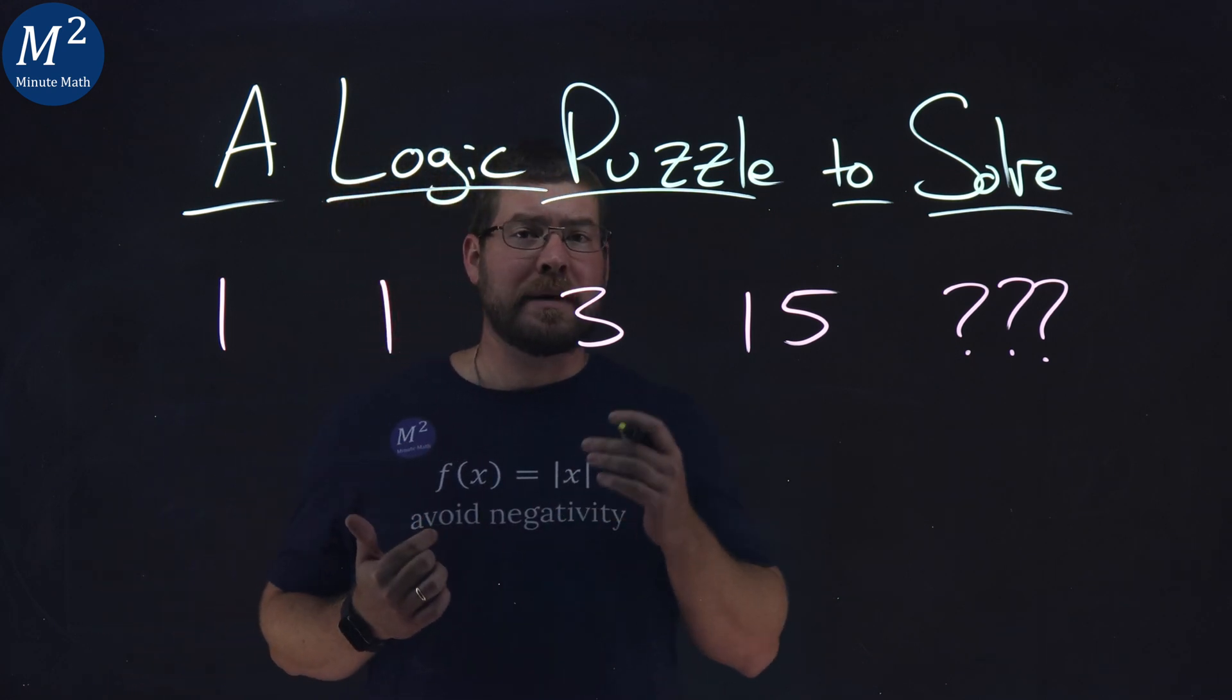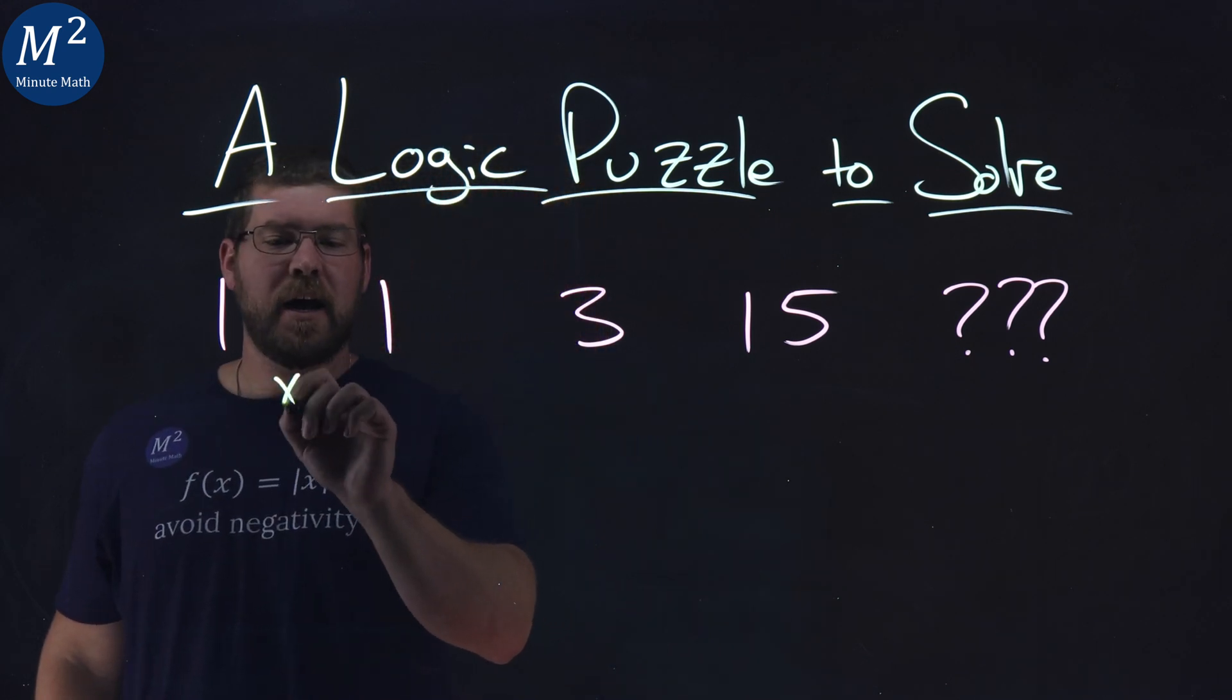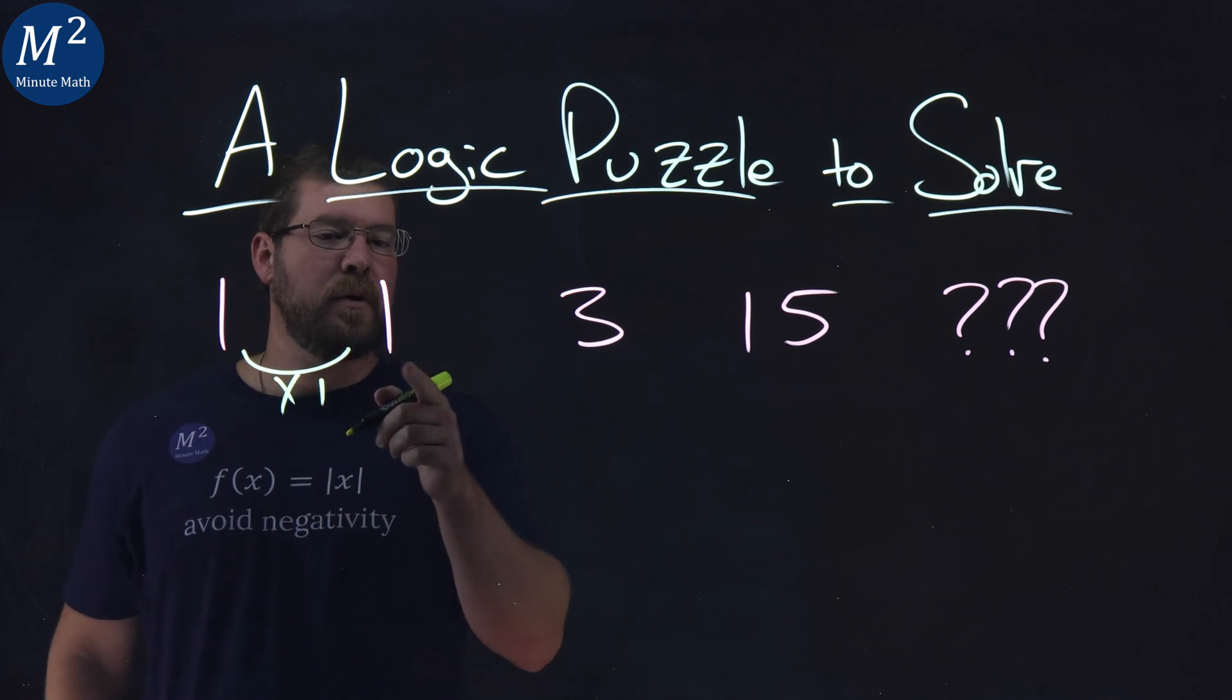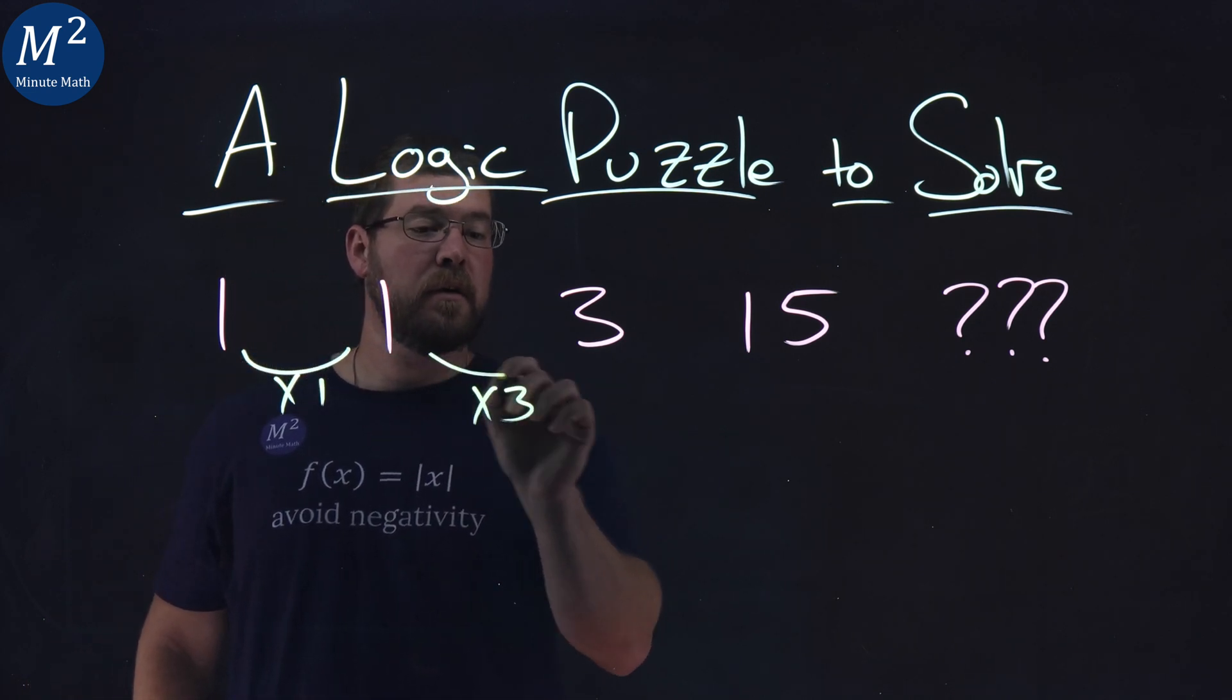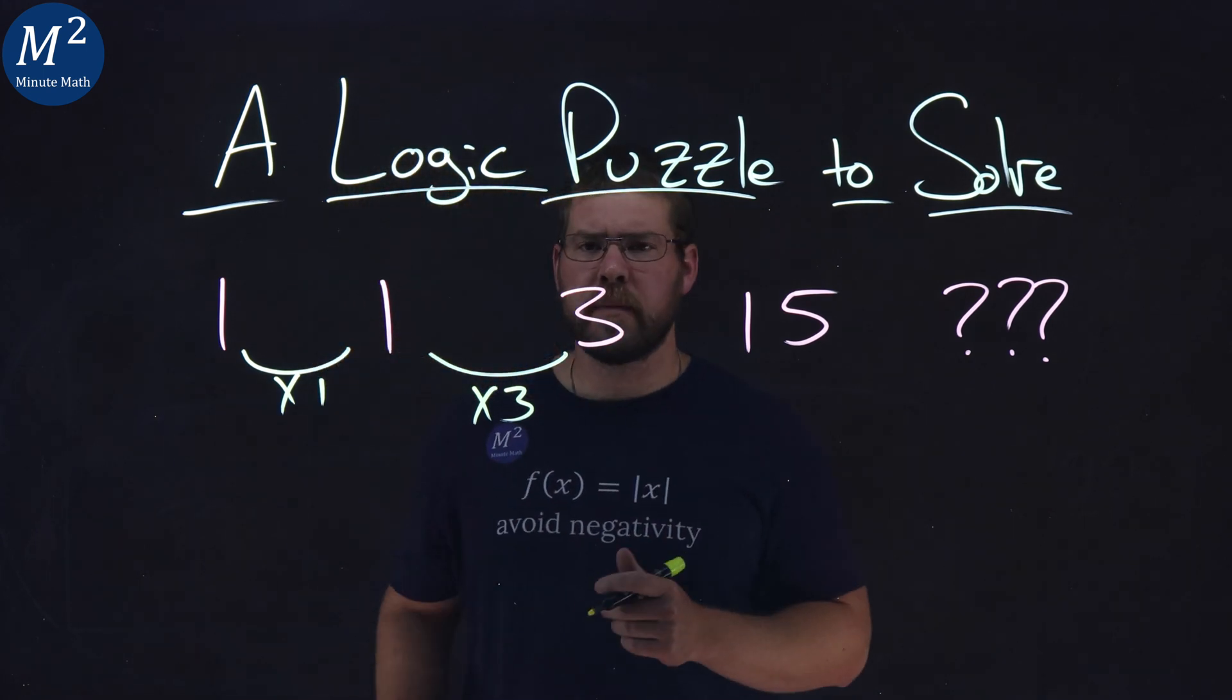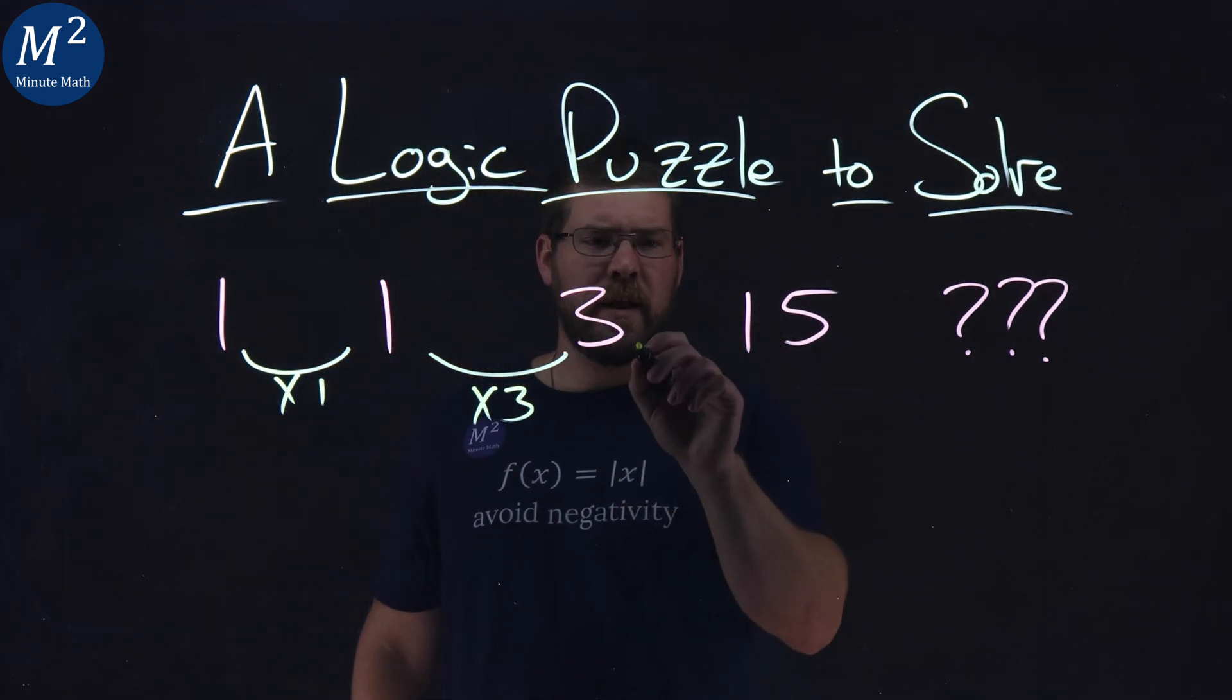I'm thinking actually a little bit of multiplication here. 1 times 1 gives me a 1, and then 1 times 3 gives me the 3. What times 3 gives me a 15? Well, that's a 5.